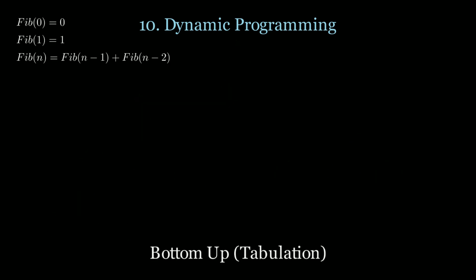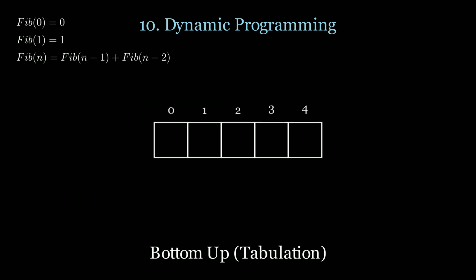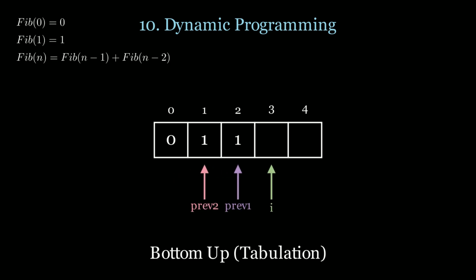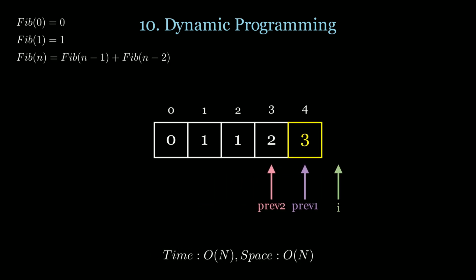Now instead of top-down, we could look at a bottom-up approach. The bottom-up approach uses iteration instead of recursion, using an array to store previous values. We use an array to store 0 and 1 for the initial base cases and use pointers to calculate the next element, and finally we get 3.